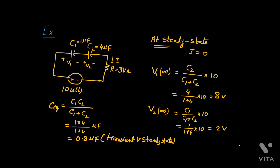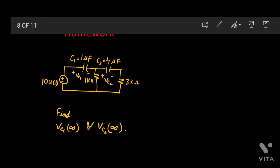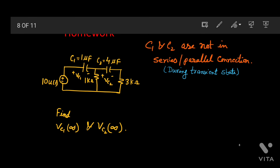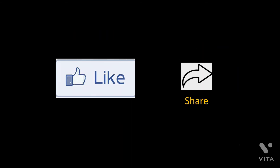Now I will give you a small homework using the same problem I started with. Can you find the voltages VC1 at infinity and VC2 at infinity? To find this, first understand whether these two capacitors are really in series at steady state or not. One hint: C1 and C2 are not in series or parallel combination in steady state.